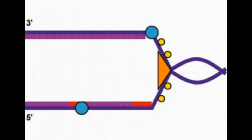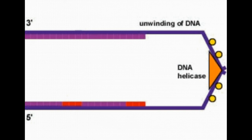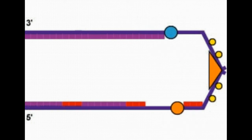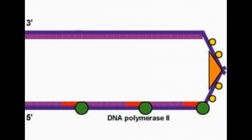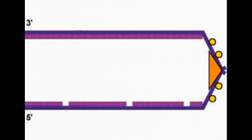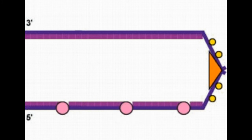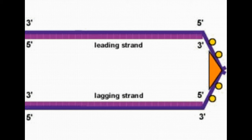RNA primase offers a site so that polymerase can attach to the three-prime end and kind of work backwards, producing DNA segments discontinuously. Our leading strand on the top continues to produce a complete strand of DNA, while on the bottom we're producing Okazaki fragments. DNA ligase comes in and completes the replication process so that we end up with two identical strands of DNA.